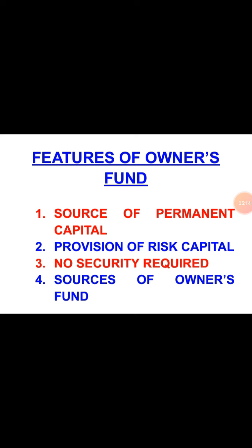The third point is no security required. If a business takes money from anyone in the form of a loan, it has to pledge some kind of security. But for owner's fund, the business does not need to pledge any kind of security. The fourth point is the source of owner's fund. Owner's fund basically includes two things: share capital and retained earnings. Retained earnings are also called accumulated profit in many places. So owner's fund includes share capital, retained earnings, and accumulated profit.